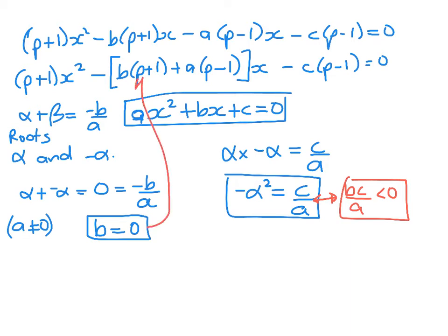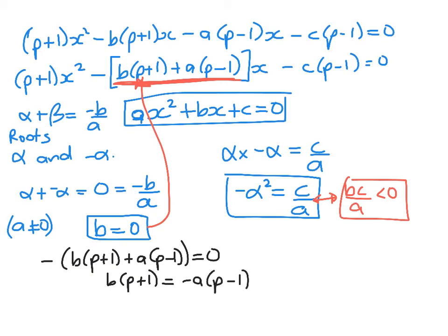All I have to do next is to take this coefficient and equate it to 0. So we know that negative b times p plus 1 plus a times p minus 1 is equal to 0. So rearranging that, I'm going to rearrange it to get all the terms with p on one side. So we have b times p plus 1 equals negative a times p minus 1, which gives me p minus 1 over p plus 1 is equal to negative b over a. I have skipped a couple of tiny lines in there, but you should be able to get from here to here.